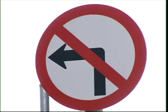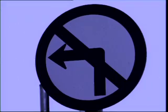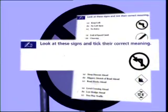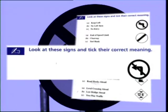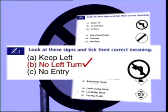To help you along, the Read Right Now workbook has a couple of useful exercises you might like to practice. On page 84 you'll see an exercise where you have to look at the signs and tick their correct meaning. For example, does this sign mean: A — keep left, B — no left turn, or C — no entry? The correct answer is B, no left turn.